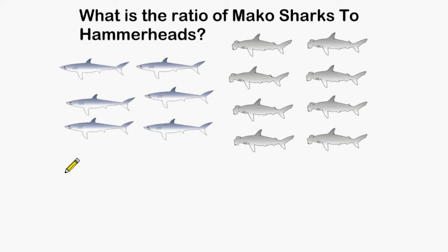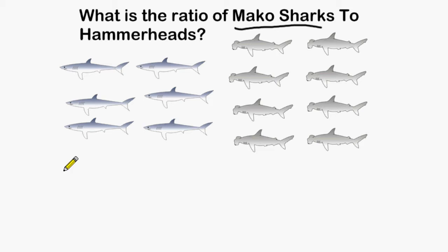In this problem we have to find the ratio of mako sharks to hammerhead sharks. The problem first asks for mako sharks so we have to count those first. We have 6 mako sharks, and the number of hammerhead sharks is 8.